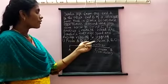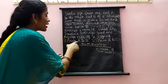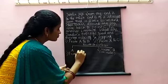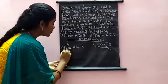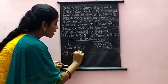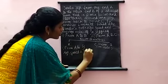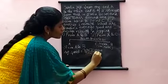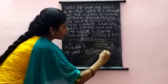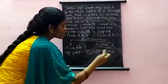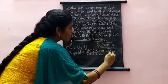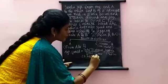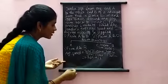We need to find average speed and average velocity from point A to B, and from point A to C. For the first case, from A to B, the formula for average speed is total distance divided by time. From A to B, the total distance is 300 meters covered in 2 minutes 50 seconds, that is 170 seconds. So average speed equals 300 divided by 170, which gives 1.765 meters per second.